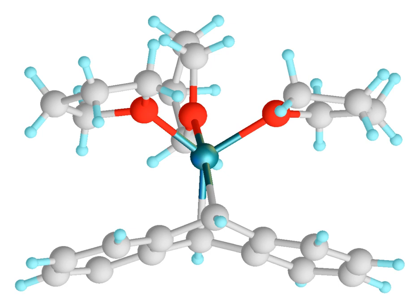The group 2 elements are known to form organometallic compounds. Of these, organomagnesium compounds, usually in the form of Grignard reagents, are widely used in organic chemistry, while the other organometallic compounds of this group are largely academic.